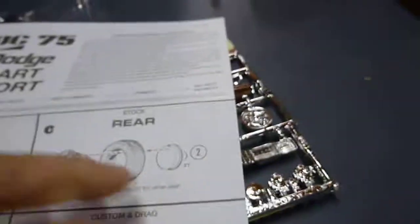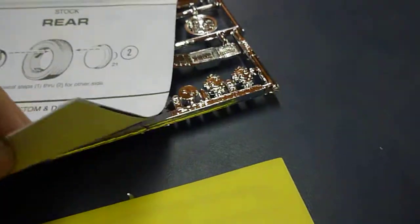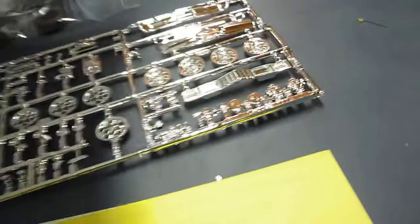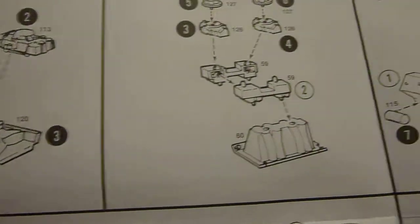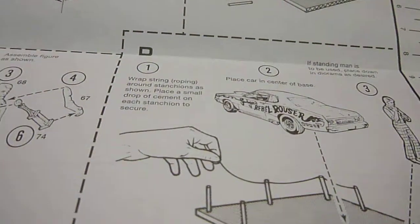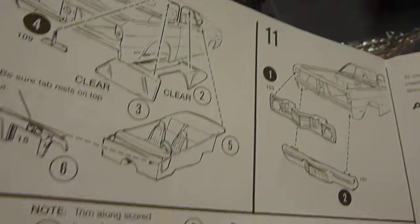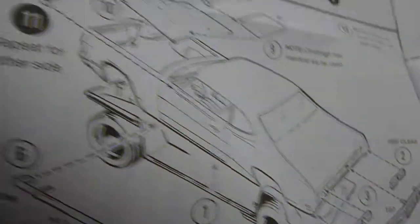And of course, your instruction sheet. Starts out with your wheels. Should be a fun little kit. I think this will look really cool. Maybe in beige with some dark beige interior. Also tells you how to make a little diorama. And of course, the rest for your stock and drag.